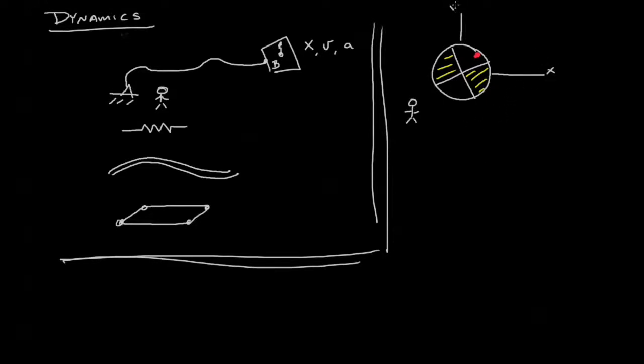Your friend has a coordinate frame, this is the fixed coordinate frame x and y, and you're sitting on the merry-go-round. Your coordinate frame is skewed like this and we'll call it y' and x'.